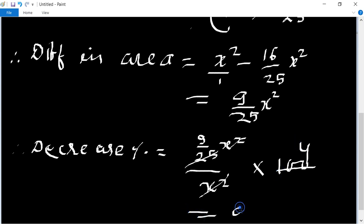So 9 times 4 is 36, which is the answer. 36%.